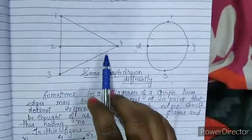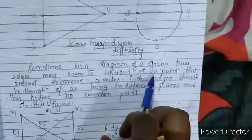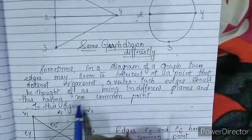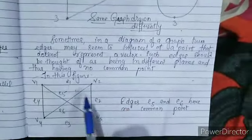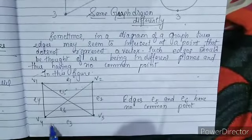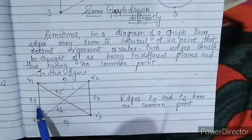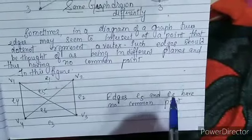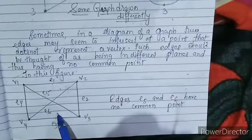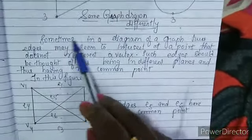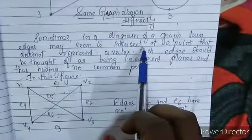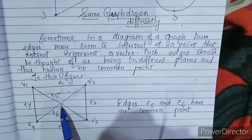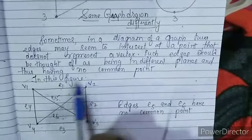The total number of vertices is not enough to determine equivalence — the number of edges must also be the same. Sometimes in a diagram of a graph, two edges may seem to intersect at a point that does not represent a vertex. Such edges should be thought of as being in different planes and thus having no common point. For example, edges E5 and E6 have no common point in this figure.